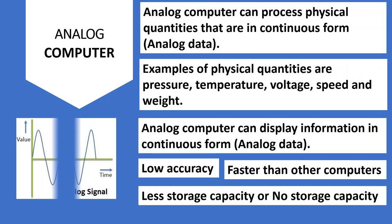An analog computer can process physical quantities that are in continuous form. Examples of physical quantities are pressure, temperature, voltage, speed, and weight.